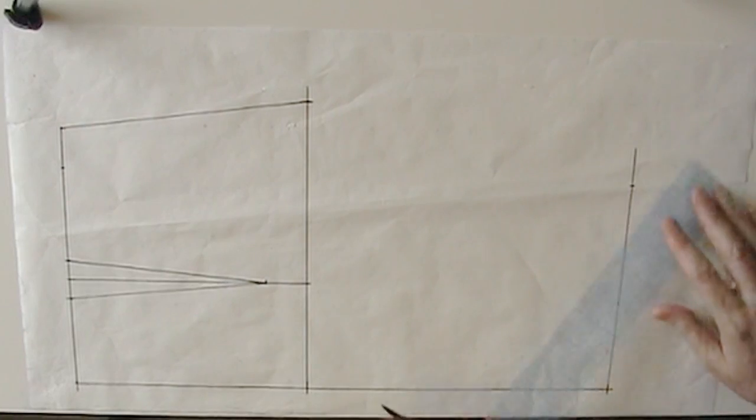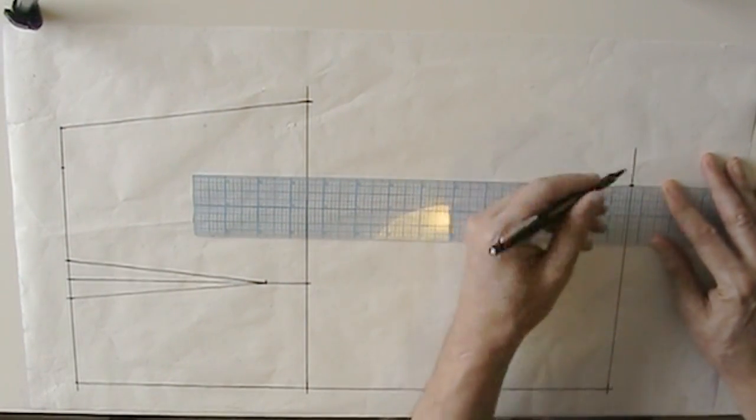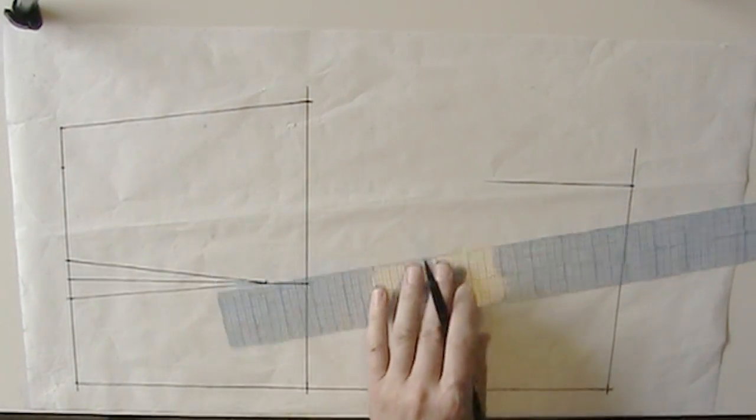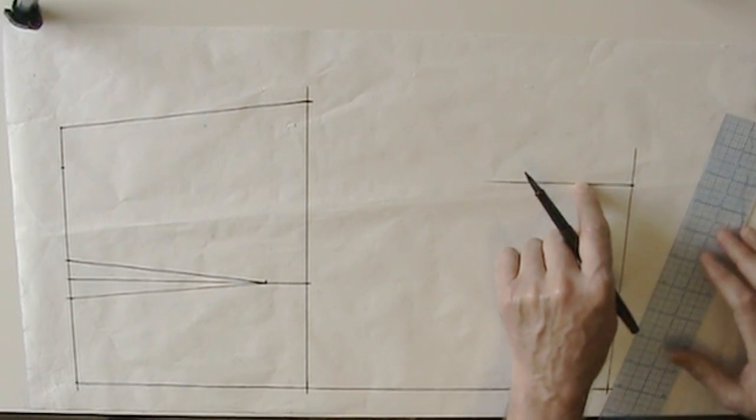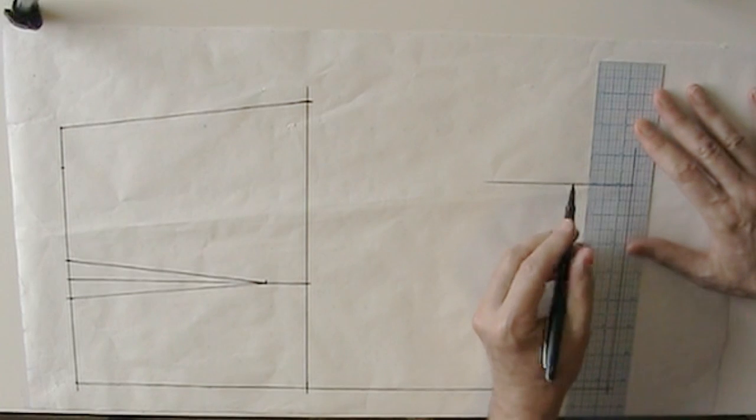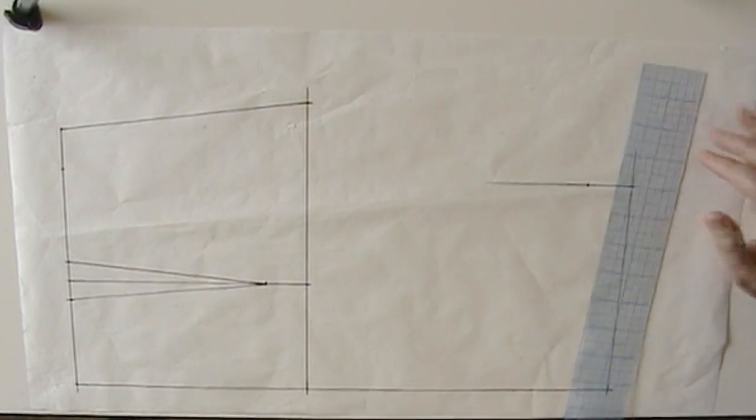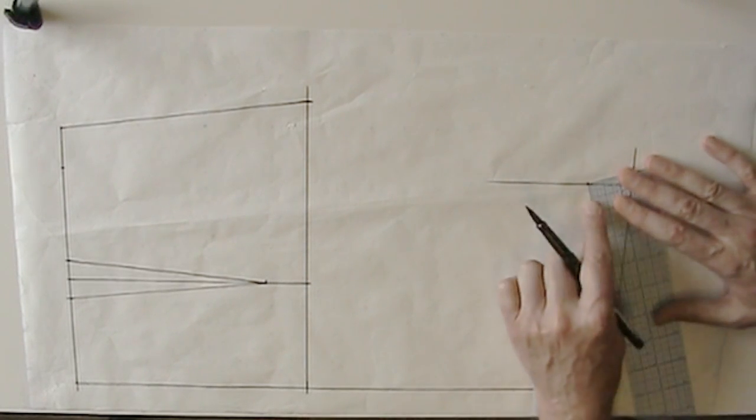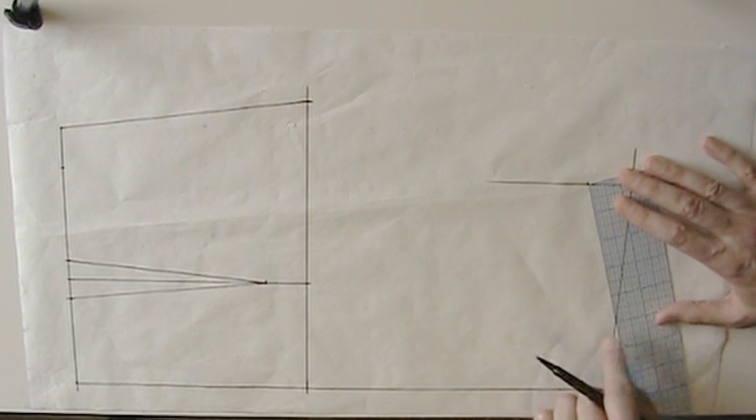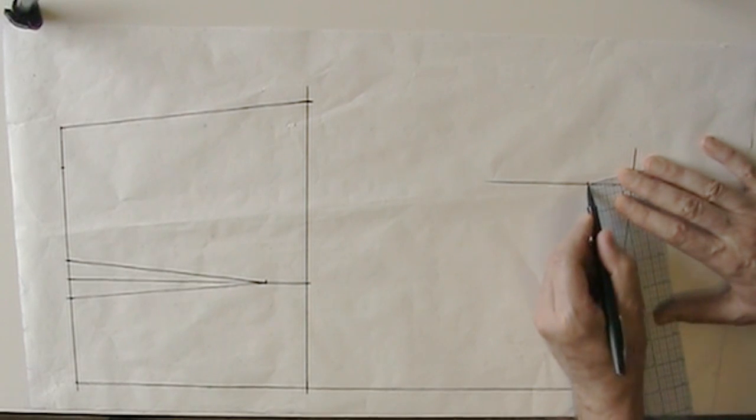Now like before, I'm going to square a line down here. And I'm going to mark a point at my shoulder slope distance, which was 1 3/8. Our shoulder seam length was 5 inches. So I'm going to place my ruler at this point here and angle upward until the 5 meets my shoulder line. And connect the two.